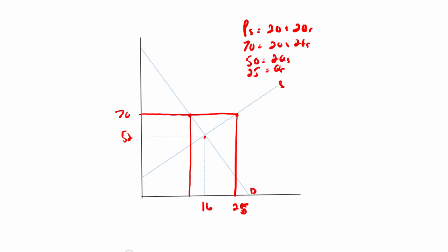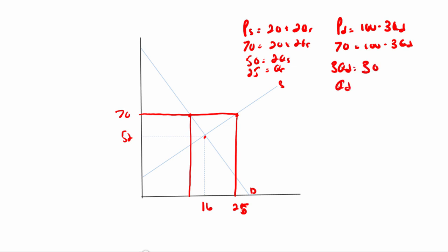Now for quantity demanded: PD equals 100 minus 3QD. The price is $70, so 70 equals 100 minus 3QD. Bringing the 3QD over and the 70 over gives 3QD equals 30, so QD equals 10. Consumers will demand 10 units after trade opens. Exports equal 25 minus 10, or 15 units — that's the answer to number 14: they export 15 units.